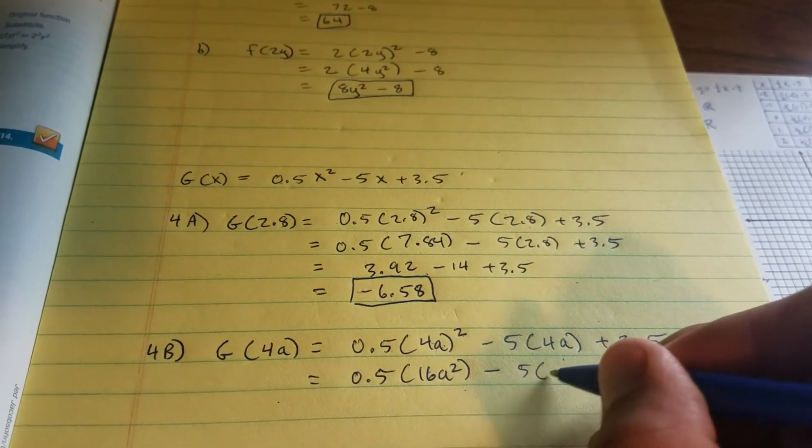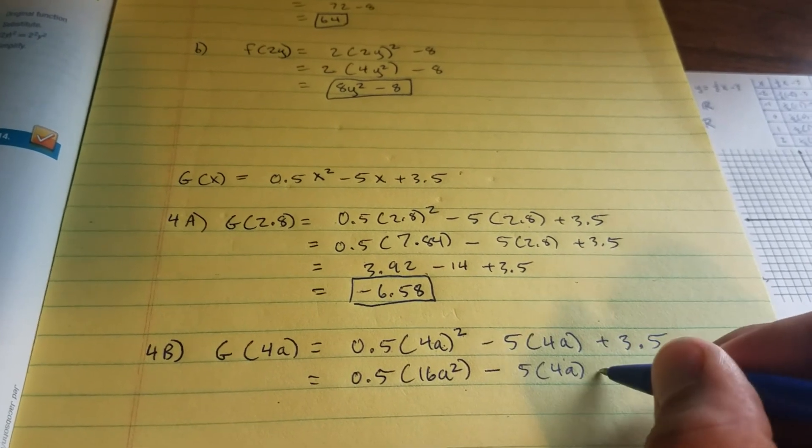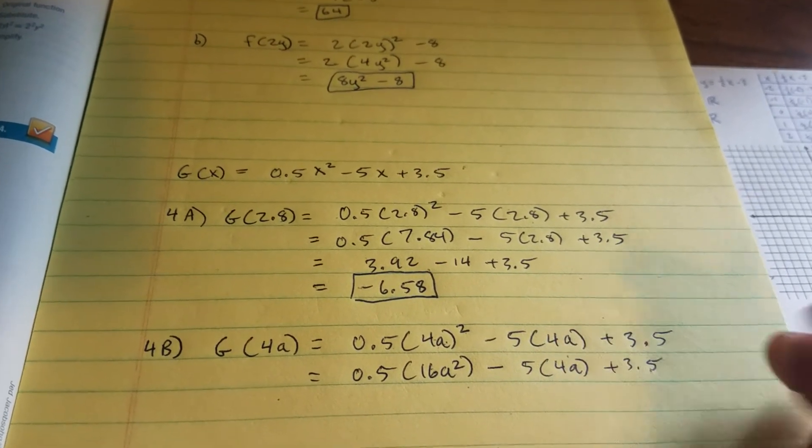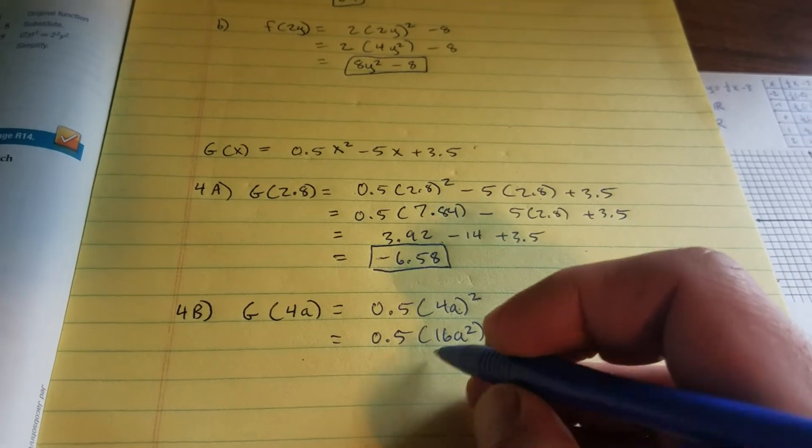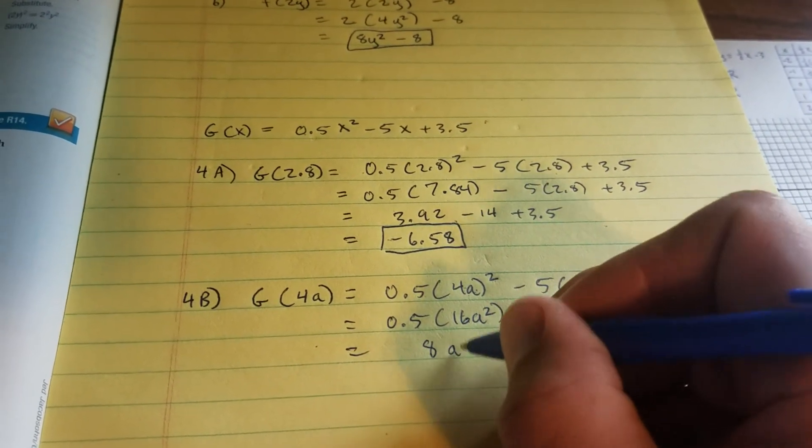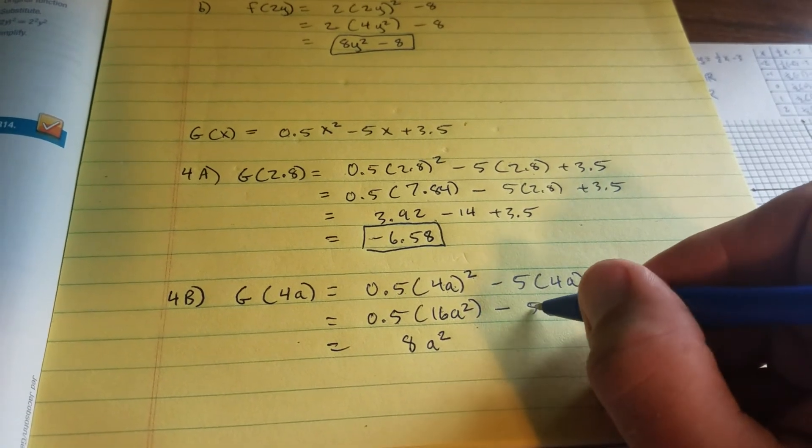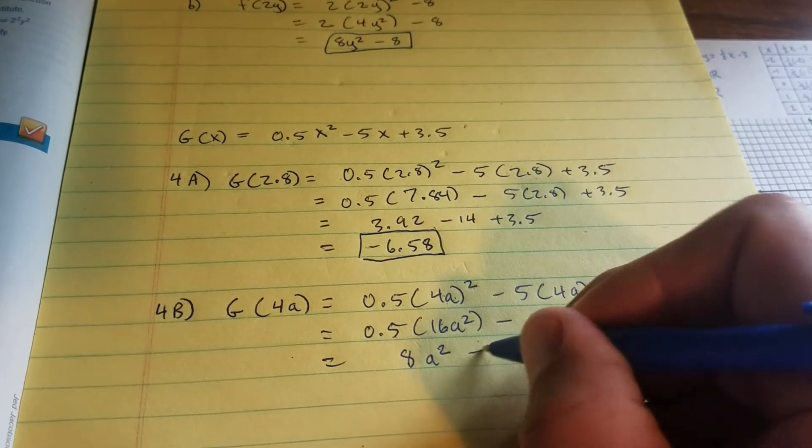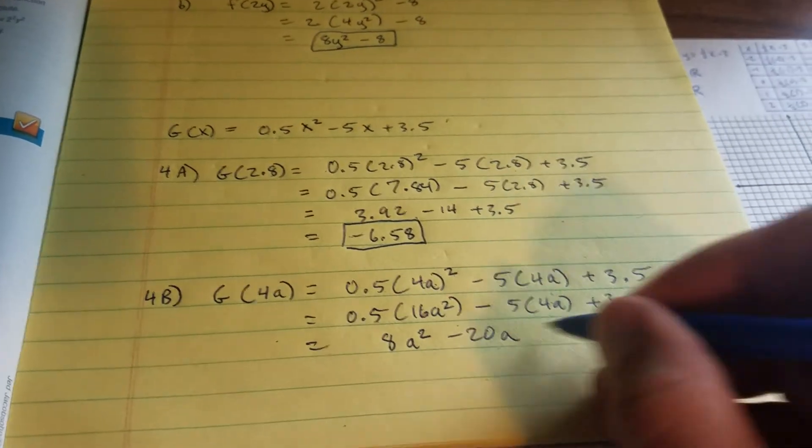Minus 5 times 4a plus 3.5. And then do your multiplication. A half of 16 is 8, 8a squared. 5 times 4 is 20, so minus 20a, and then plus 3.5.